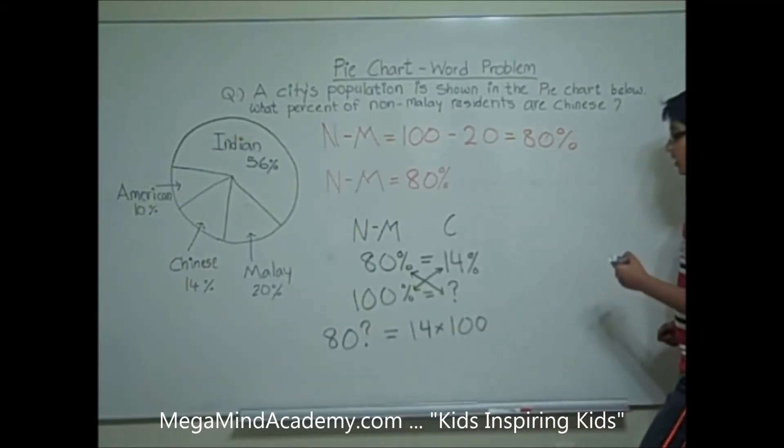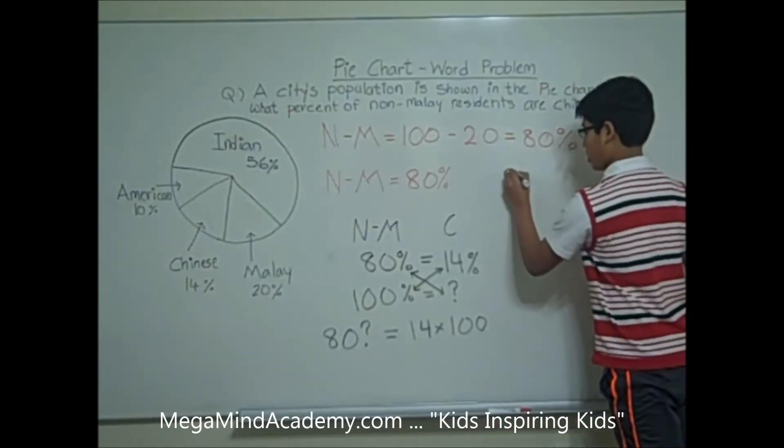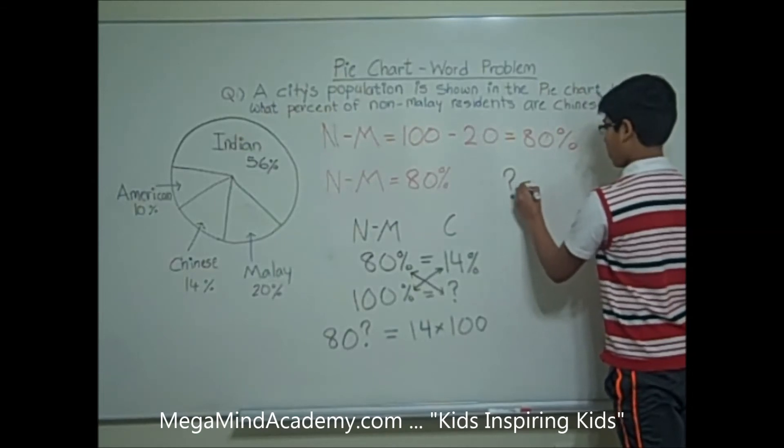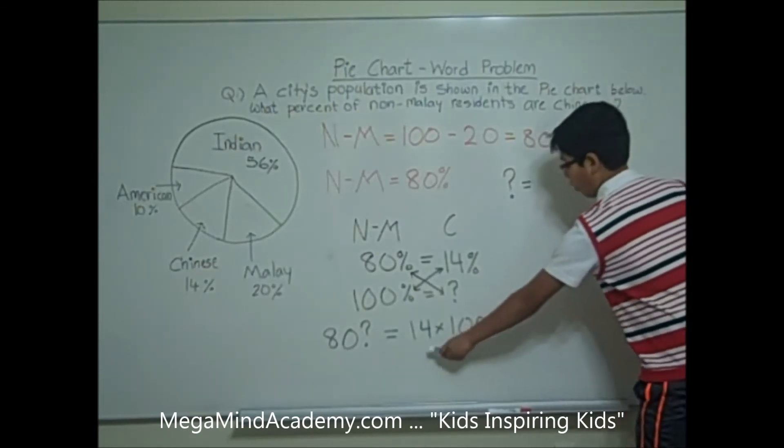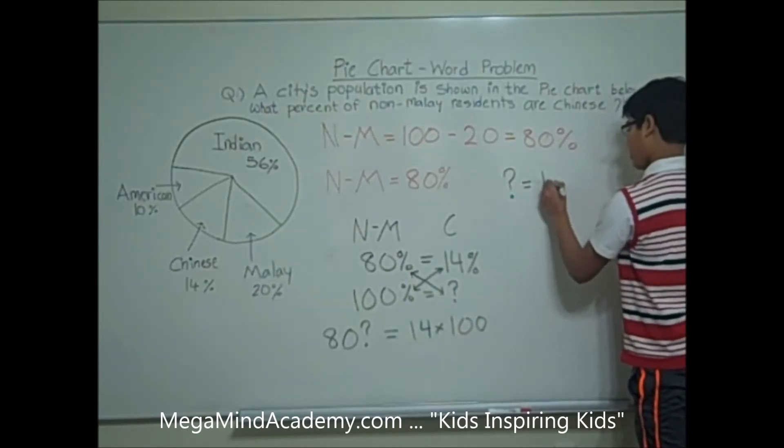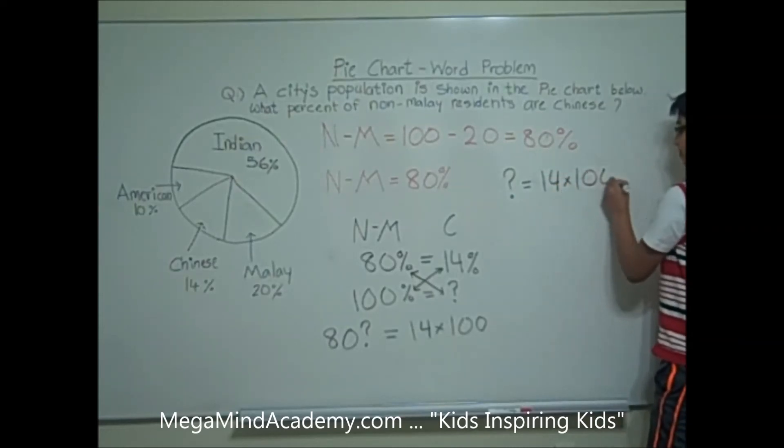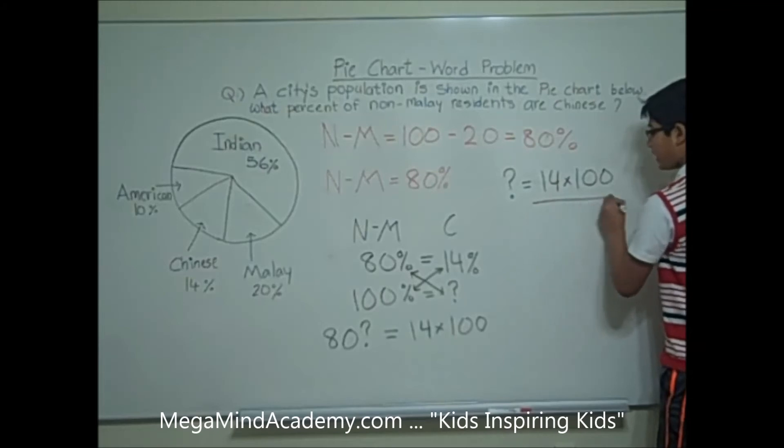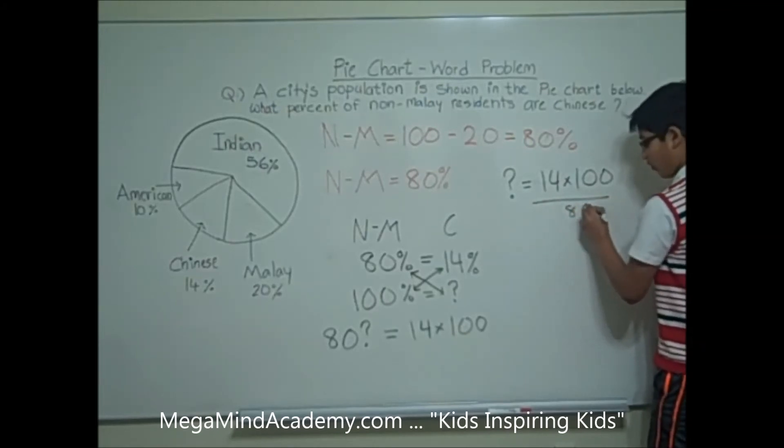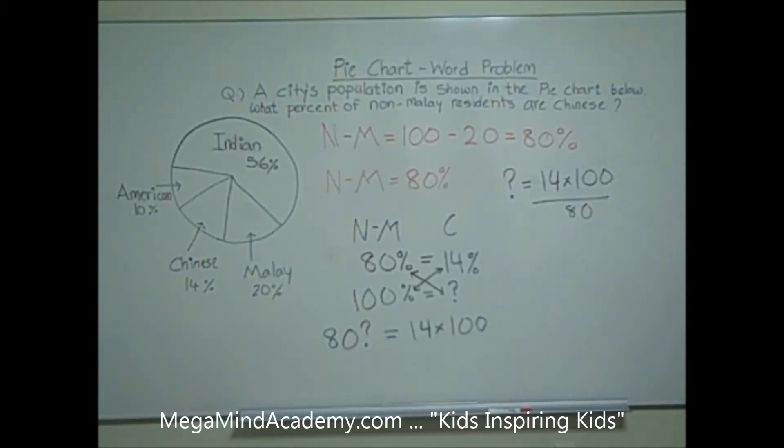So, the unknown is equal to 14 times 100 divided by 80. 80 and 100 are both divisible by 20. 80 divided by 20 is 4, and 100 divided by 20 is 5.